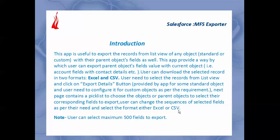The first point is introduction. This app is useful to export records from the list view of any object with their parent object fields as well. In Salesforce, each object has its own list view for displaying records with proper filter criteria. This app provides an easy way for users to export parent object field values with the current object, select fields dynamically, and change their sequence as per their own need. They can download selected records in two formats: Excel and CSV.